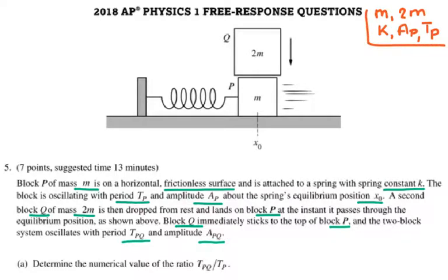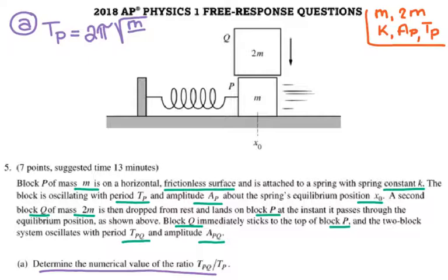To find the TP first, the period when the mass P is only attached, that for the equation of the period of the spring, you have 2π times the square root of M over K. When the second mass drops on top, you have TPQ is going to have 2π, and the mass now is 3M because M plus 2M gives me 3M over K.